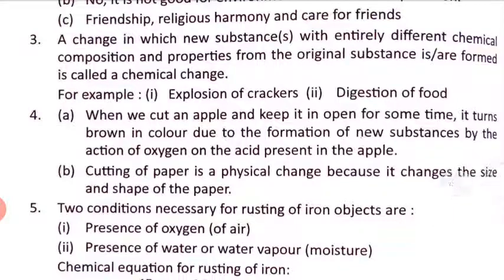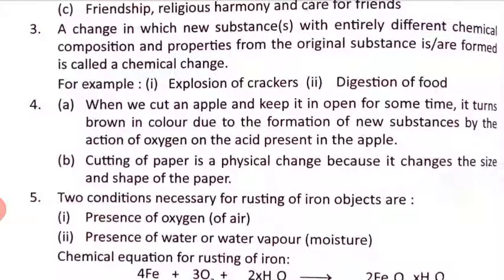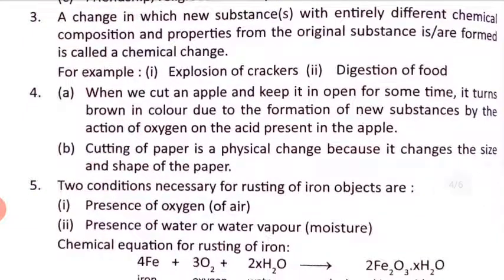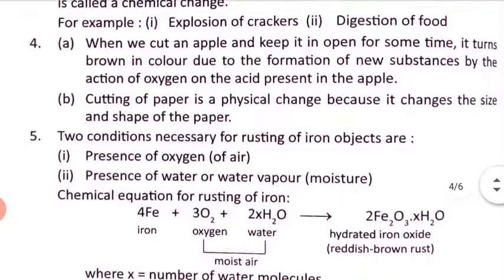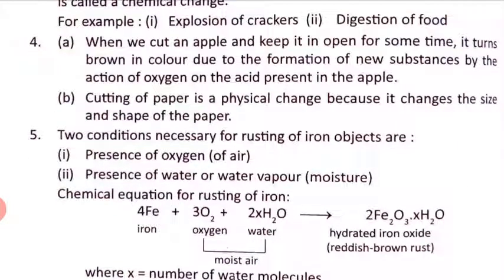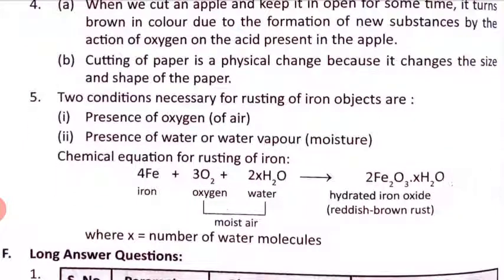Fourth question: why does the cut surface of an apple turn brown in color when kept in open for some time? When we cut an apple and keep it in the open, it turns brown due to the formation of new substances by the action of oxygen on the acid present in the apple. Why is cutting paper a physical change? Cutting paper is a physical change because it only changes the size and shape of the paper — it does not change its chemical properties.